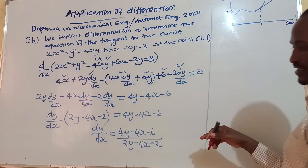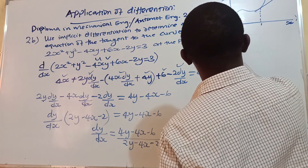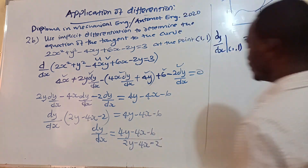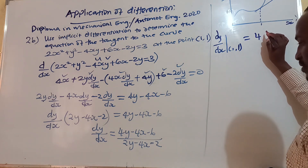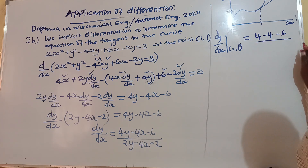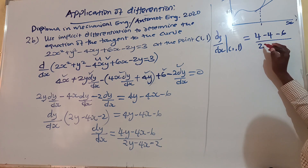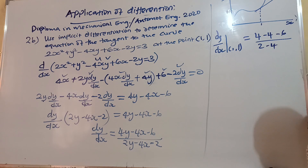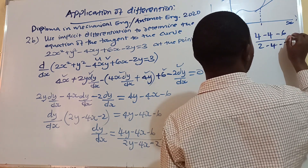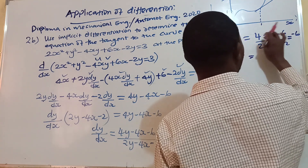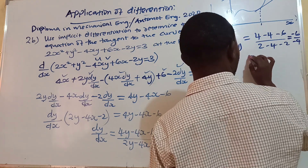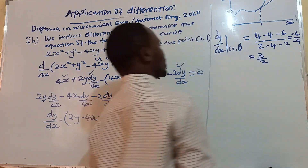We substitute the point (1, 1) — where x equals 1 and y equals 1 — into the expression. So dy/dx at (1,1) equals (4×1 minus 4×1 minus 6) over (2×1 minus 4×1 minus 2), which gives (0 minus 6) over (0 minus 4), equal to negative 6 over negative 4, which simplifies to 3/2.